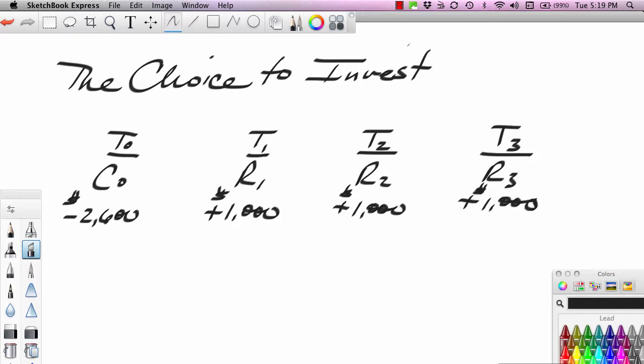Hi, this is Ron Sipsik. In this segment, we're going to take a look at the choice to invest. What makes the investment problem interesting is that the costs are incurred in the present, but the returns are spread out in the future. You cannot compare future returns to present costs because a dollar in the future does not equal a dollar in the present. We learned about this in our time value of money principles.